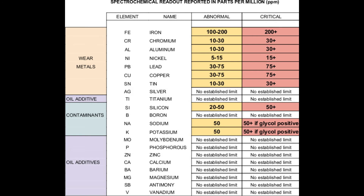Oil analysis reports will typically designate wear metals and contaminants as normal, abnormal, or critical. The chart listed here is a generalized guideline for threshold limits seen at the end of your manufacturer's recommended oil drain interval. This cannot be considered applicable to every diesel engine, and you are strongly encouraged to contact your engine's manufacturer for the proper threshold limits for your specific engine make and model. This document can be downloaded and printed at the link in the comments section below.